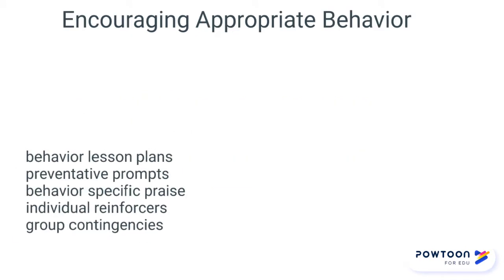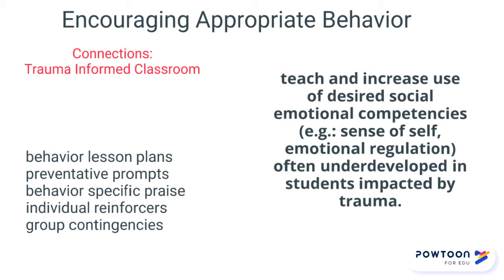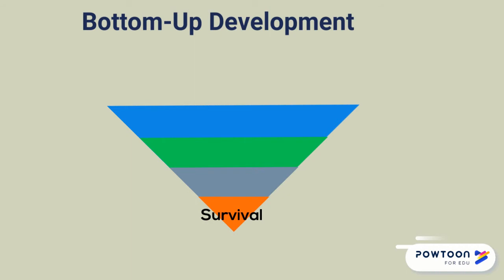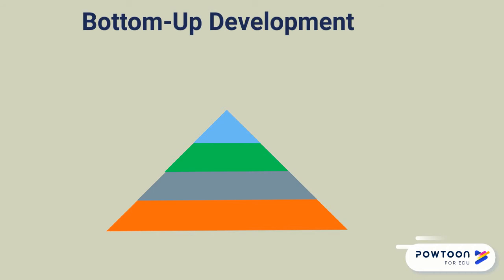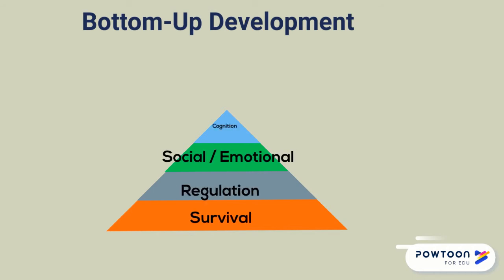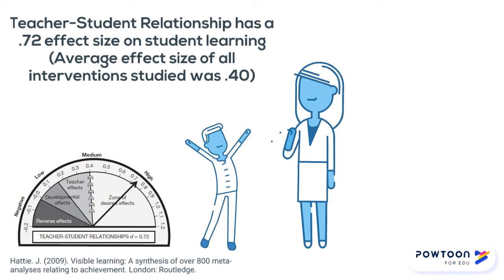When you use behavior lesson plans, preventative prompts, behavior-specific praise, individual reinforcers, and group contingencies, you are creating a trauma-informed classroom. You will teach and increase the use of desired social-emotional competencies among those who need it the most. For a normally developing child, most of their brain can be used for cognition and social-emotional skills. For a child in crisis, or a child who has experienced many instances of trauma, much more of their brain goes to survival and regulation, leaving relatively little resources for social-emotional skills or cognition. When you use these tools to encourage appropriate behavior, you will be building relationships with your students — and building relationships with students is how we ensure academic success.